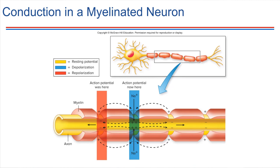Coming back to the myelin sheath that we mentioned for axons. Axons have a myelin sheath and we said that that acts like insulation and allows signals to propagate more quickly. Now that we know about all this ion flow that's going on, let's think about how that can be — how is this the helpful thing?